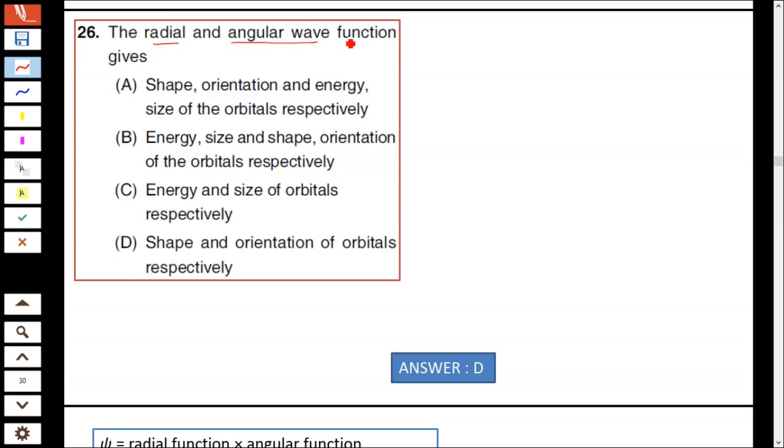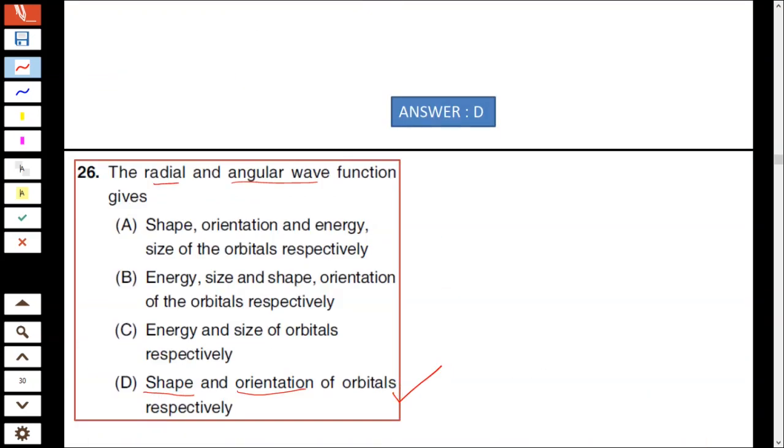Question 26: The radial and angular wave function gives—radial wave function represents the shape of the orbital and the angular wave function represents the orientation of the orbital. Hence option D is correct: shape and orientation of the orbital.